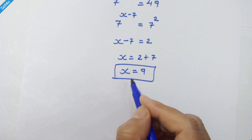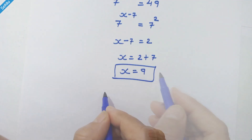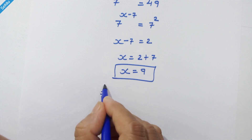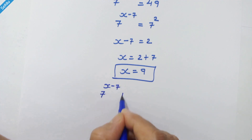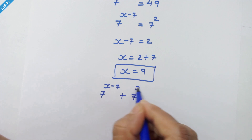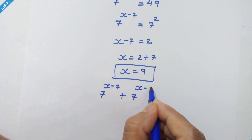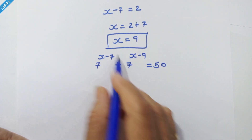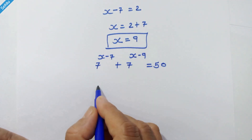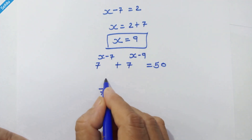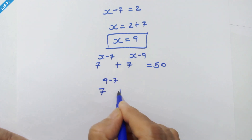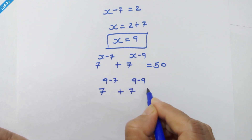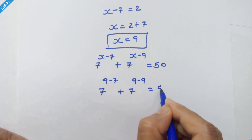Let's check our answer whether it is correct or not. Here is our given equation: 7 raised to x minus 7 plus 7 raised to x minus 9 is equal to 50. Putting x equal to 9, we get 7 raised to 9 minus 7 plus 7 raised to 9 minus 9 is equal to 50.